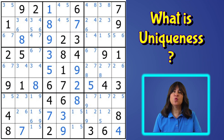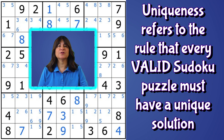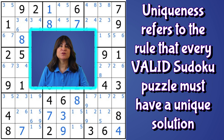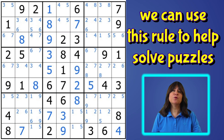First, let's review what uniqueness is. It's the rule that every valid Sudoku puzzle must have one and only one unique solution. If it has more than one solution, then you have to start guessing. And the idea is to solve Sudoku using logic, not guessing. And that of course means a puzzle must have only one solution. Now we can use that rule to help us solve puzzles, since we can eliminate candidates that would otherwise result in an invalid puzzle.